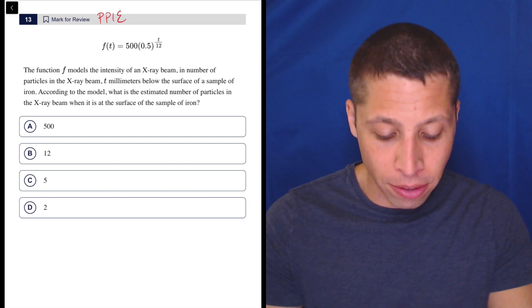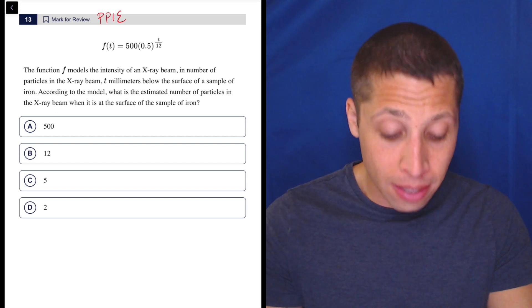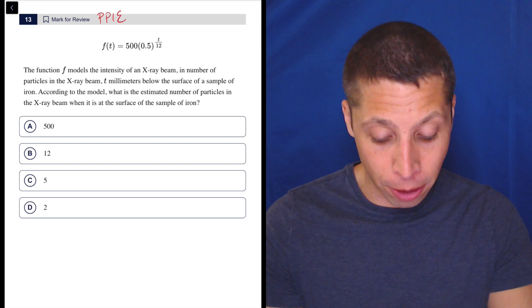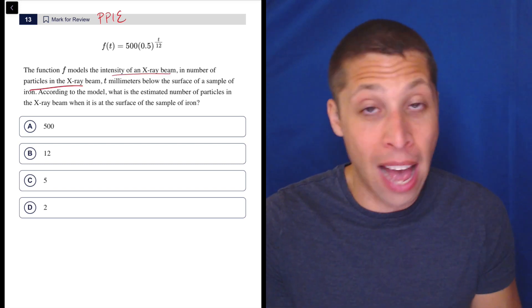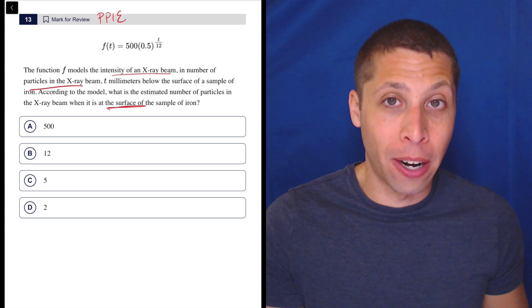The function f models the intensity of an x-ray beam in number of particles in the x-ray beam, t millimeters below the surface of a sample of iron. According to the model, what is the estimated number of particles in the x-ray beam? So the intensity of an x-ray beam, that's kind of the f, when it is at the surface of the sample of iron.